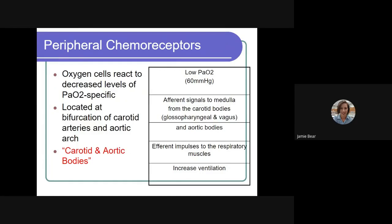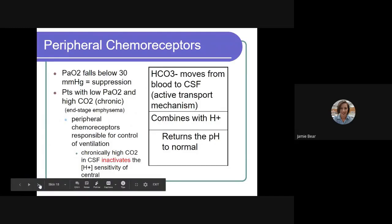Then efferent impulses to the respiratory muscles will tell the diaphragm and intercostals to contract increasing ventilation as we increase ventilation that will help the PaO2 levels in our blood. So this does work until the PaO2 falls to below about 30, and then they do unfortunately get suppressed.